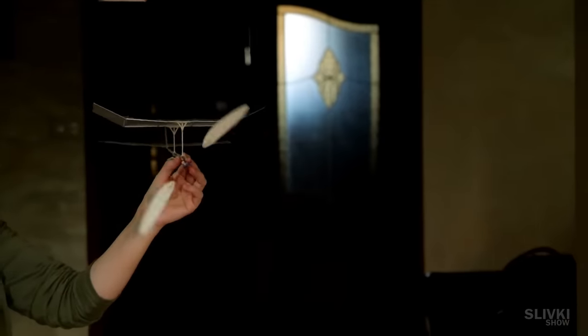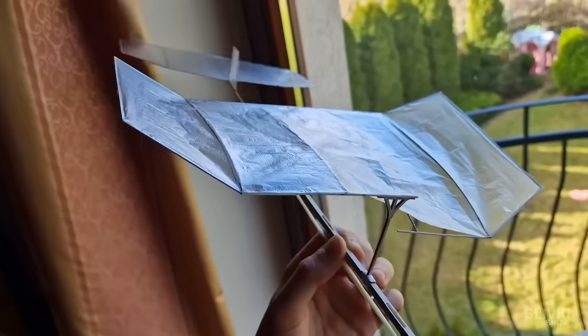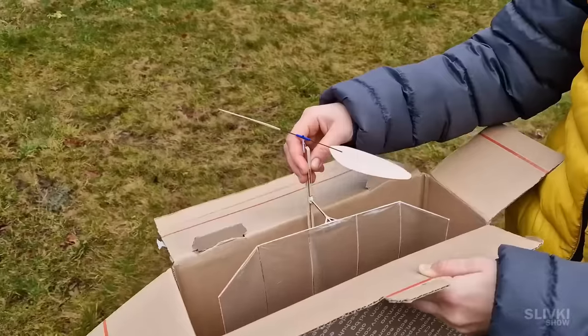Since it's very light, we should launch it at home or outside in windless weather, as even a light breeze will toss it sideways and break its wings. We had this happen already, so we had to fix it. But luckily, thanks to super glue, it's a very easy thing to do.